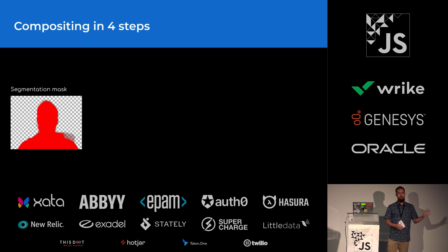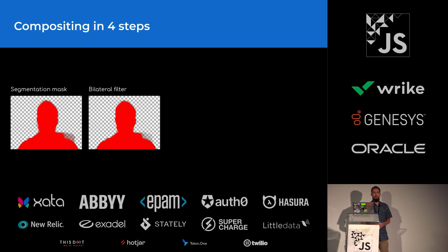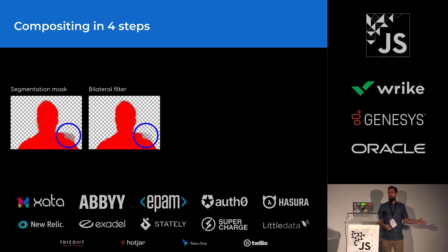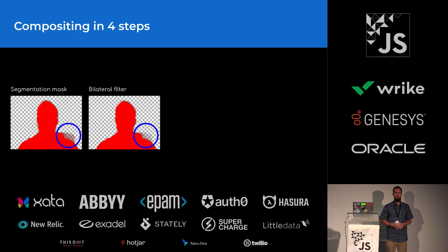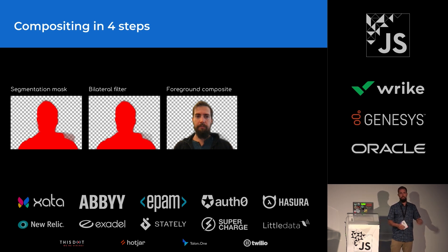Compositing a virtual background can be done in four steps. First, we'll paint our segmentation mask that we received from the machine learning runtime. Next, we'll apply a bilateral filter to smooth out the mask. A bilateral filter is an image processor that reduces noise in a given image. You might be familiar with a type of bilateral filter used in many video chat applications that smooths out skin and makes you look a little bit younger. The original mask can include a bit of noise, particularly around the edges. By applying a bilateral filter to the mask, we can greatly reduce the amount of edge noise, thereby increasing the quality of the final composite.